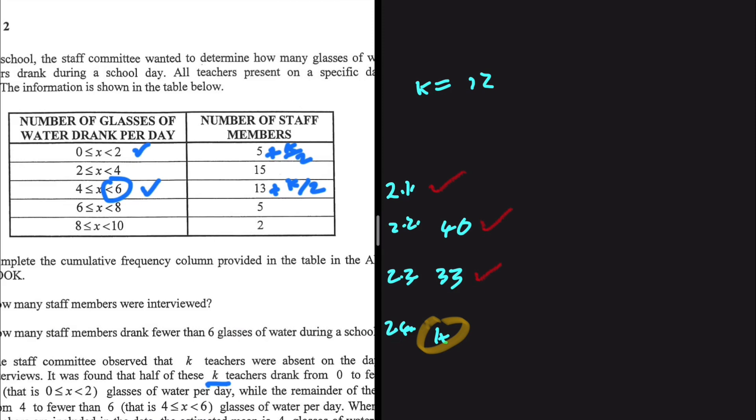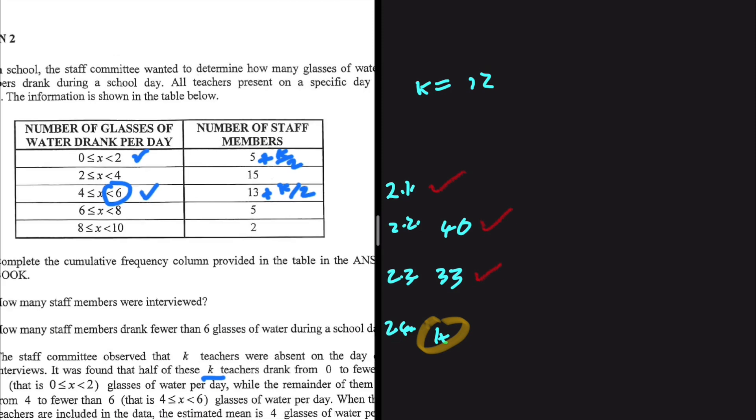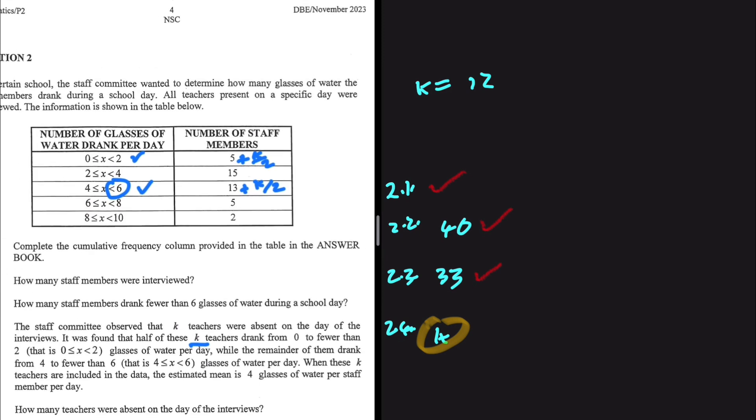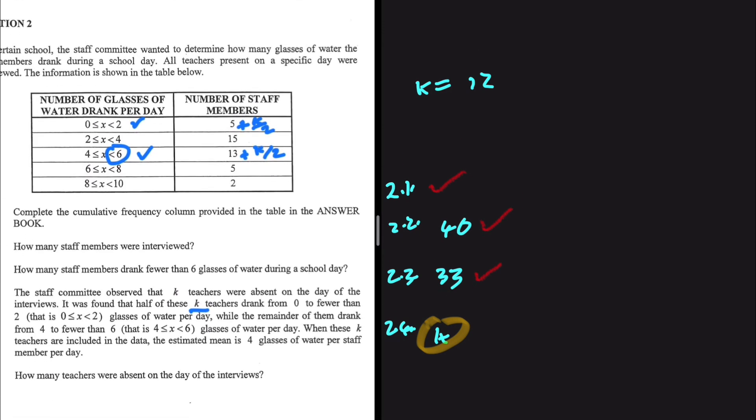Let's carry on. When these k teachers are included in the data, the estimated mean is four glasses of water per staff member per day. How many teachers were absent on the day of the interviews? Basically what is the value of k?